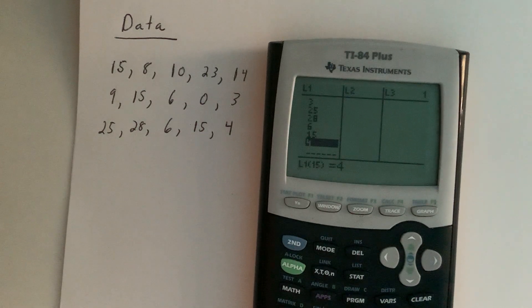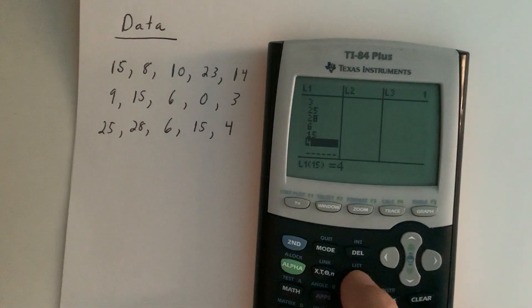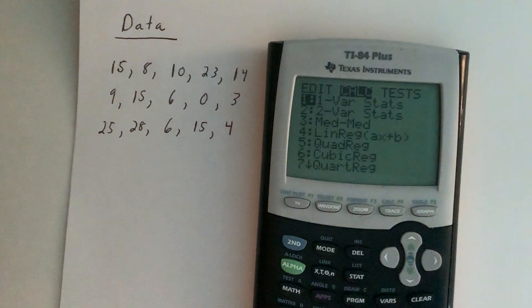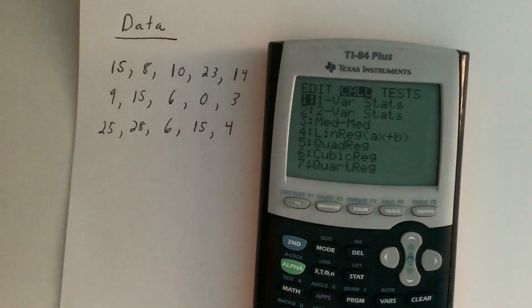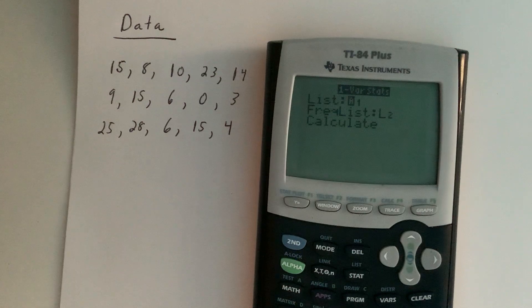Now we have our data in the list, so the calculator knows what data we want to work with. Now what we want to do is actually use the calculator to calculate the basic statistical measures like average, median, standard deviation, the things that we're interested in when working with quantitative data. To do this, we're going to hit STAT and then move our cursor over to calc. We're pretty much going to be using only a couple. For right now in our course, we want to use the one var stats, which is the very first thing.